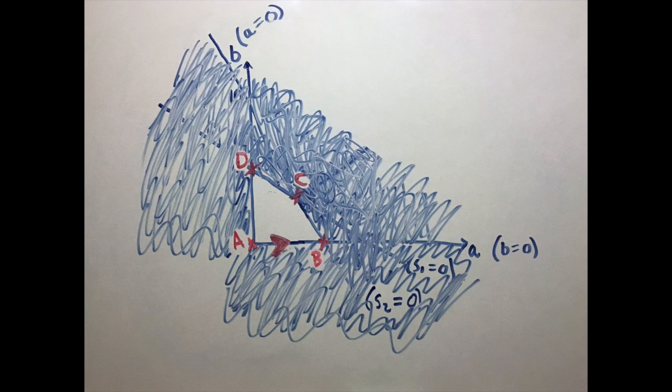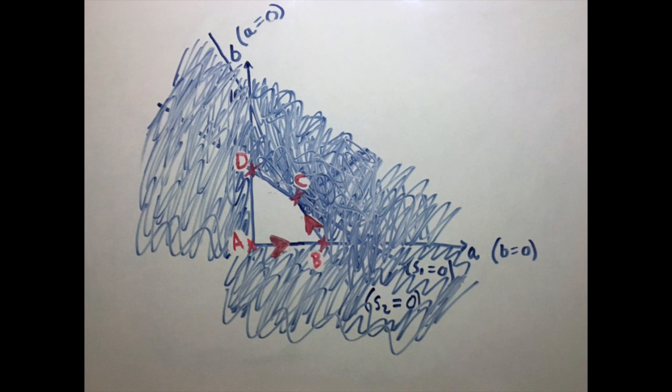By expressing the objective function in terms of B and S2, we can find the rates of increase of each variable. It turns out here, we should keep S2 equal to 0 and increase B, as B is increasing faster. We increase B as much as we can without violating any constraints and reach point C.